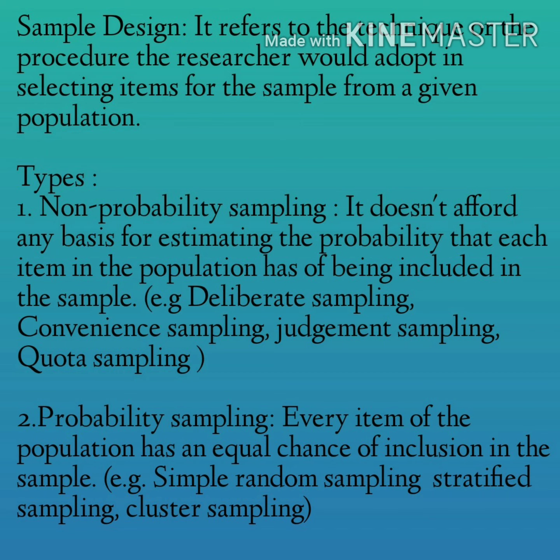Non-probability sampling does not afford any basis for estimating the probability that each item in the population has of being included in the sample. Examples include deliberate sampling, convenience sampling, judgment sampling, and quota sampling. In such designs, personal element has a great chance of entering into the selection of the sample — the investigator may select a sample that yields results favorable to his point of view. For example, if the economic conditions of people living in a state are to be studied, a few towns and villages may be previously selected for intensive study on the principle that they are representative of the entire state — this is called judgmental sampling, which is a part of non-probability sampling.